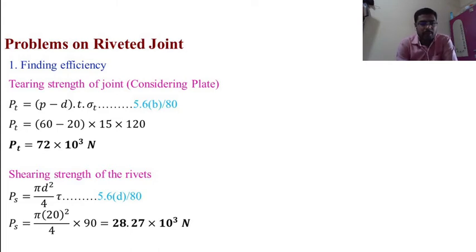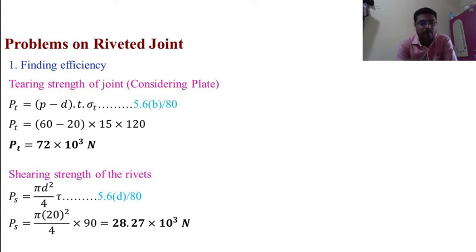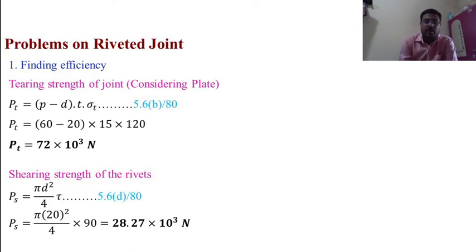Shearing strength of the rivet: PS = (π/4) × d² × τ — equation 5.6D, page 80. PS = (π/4) × 20² × 90 = 28.27 × 10³ N.